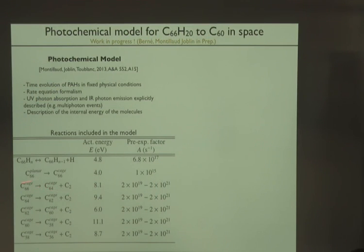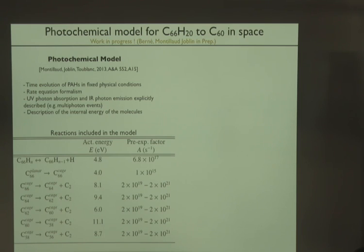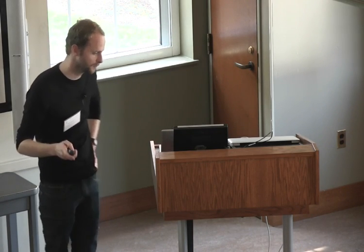Questioner: Just to do the thermodynamic calculation of how fast the A factor can be—you can use the equilibrium constant, you can estimate the thermochemistry, all you need is the entropy. And then the reverse rate, the fastest it can be is the collision rate, which you can also estimate. Then you can do the equilibrium constant to get the reverse rate. Speaker: Okay, okay. Questioner: So those A factors... Speaker: Okay, okay.